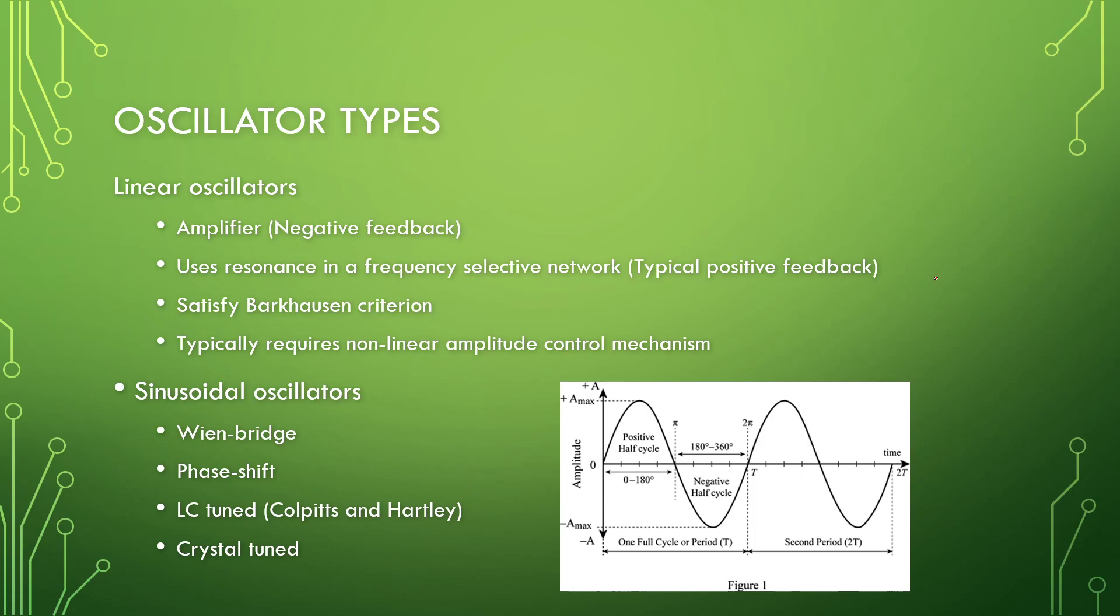But most of these linear oscillators are a bit unstable, and we need to control the amplitude of these circuits to keep them stable. So linear oscillators is typically for sinusoidal wave generation. And in this video series what we will be looking at is the wine bridge, the phase shift, some LC-tuned oscillators, and the crystal-tuned oscillator or the pierce oscillator.